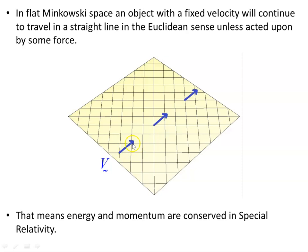In flat space there is no reason for this velocity vector to change direction. It can continue with the same velocity — constant velocity, constant direction, constant magnitude — because unless some force acts upon it, the spacetime itself doesn't cause any changes. There is no curvature in this space; it is flat.